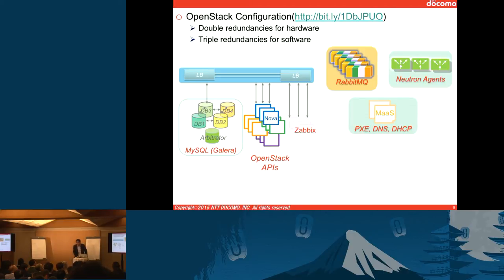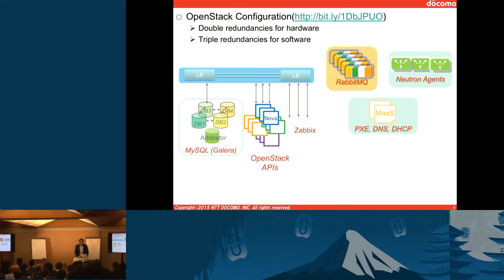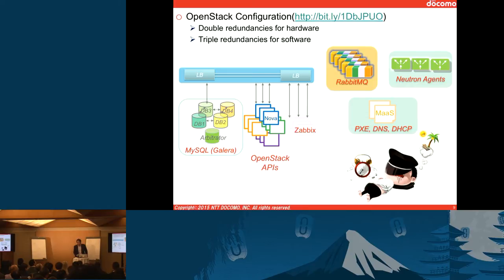Let me talk about our operations. This is a very brief overview of our OpenStack configurations — not different from the architecture presented at the Paris OpenStack Summit, so please check the URL if you have interest. The basic ideas: we put more than double redundancies for hardware and at least triple redundancies for software, so we support HA. The operator doesn't need to go to the data center if there is just one failure — you can take enough sleep over the weekend and fix it on Monday.